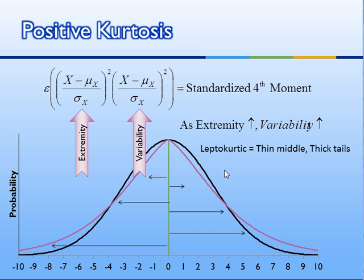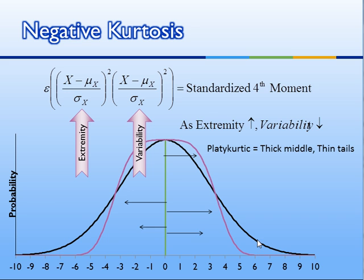With a leptokurtic distribution, as the extremity goes up — the distance from the mean — the variability at that position also goes up. With negative kurtosis, we have precisely the opposite pattern: as the position becomes more extreme, the variability at that position goes down. In the middle positions that are not extreme, we get lots of variability, and at the extreme positions, we get a lot less variability. Typically this produces a thick middle and thin tail, but we'll see that's not always true.